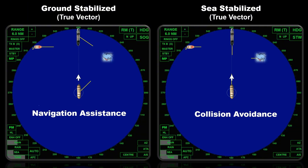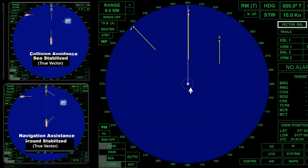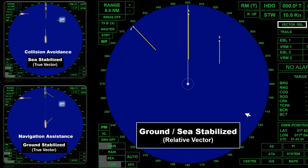When navigating in coastal water where traffic density exists, you can set one radar to ground stabilized and the other in sea stabilized mode. This is the radar display when set to relative vector. It shows the same vector regardless of whether the radar is in ground or sea stabilized mode, because in relative motion, it displays the movement of the targets in relation to our own ship's movement.